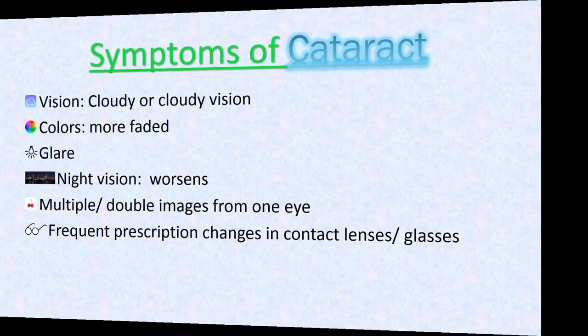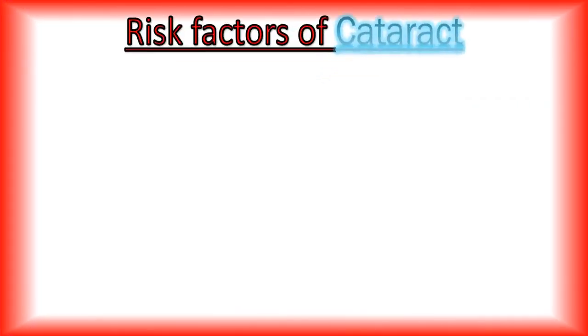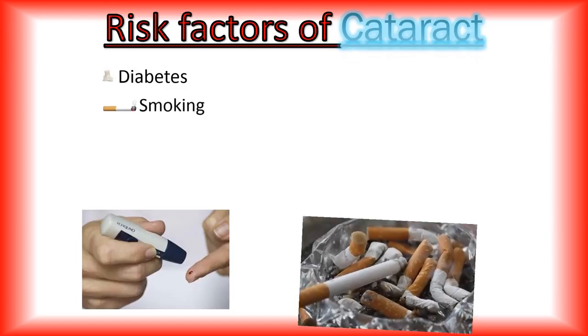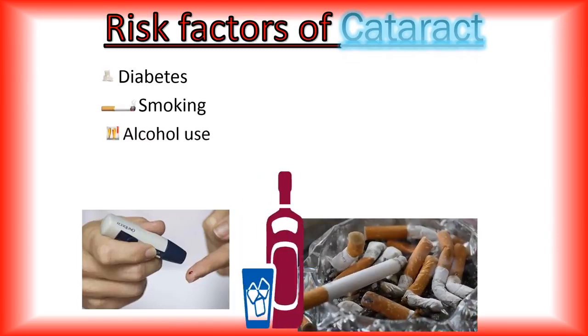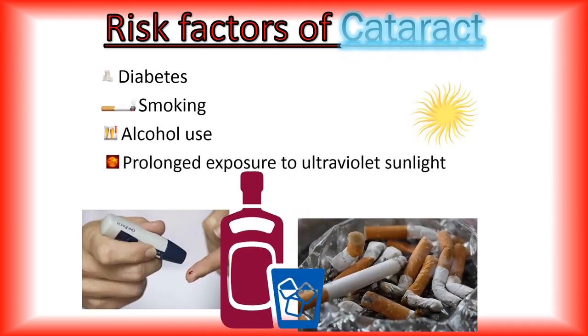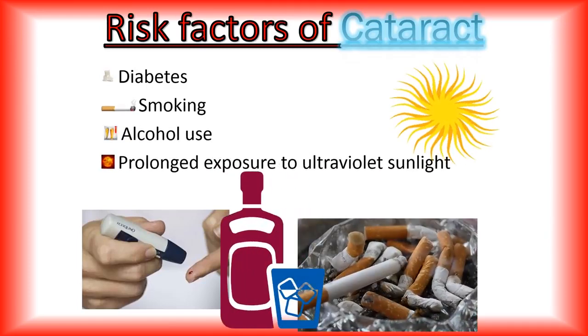Research suggests that some factors may increase the risk of developing cataract, such as diabetes, smoking, alcohol use, and prolonged exposure to UV sunlight.